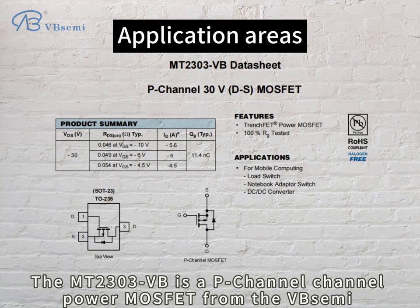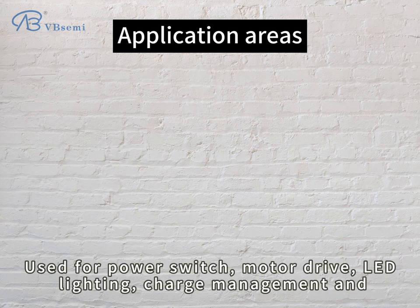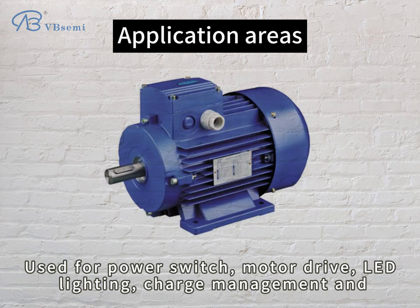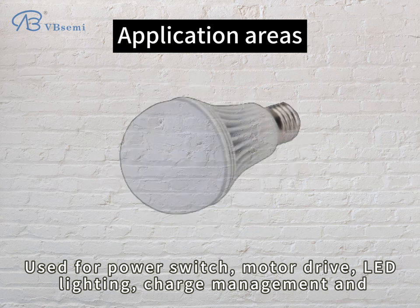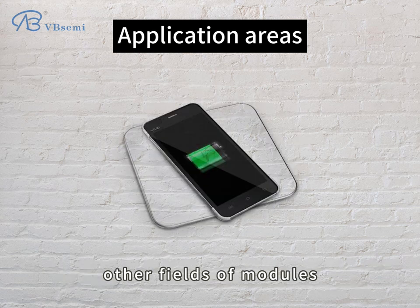The MT-2303VB is a P-Channel power MOSFET from the VB Semi brand in a SOT-23 package. It is used for power switching, motor drive, LED lighting, charge management, and other applications.